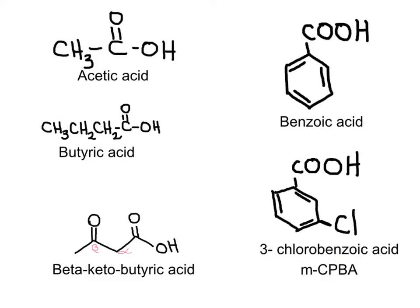When naming carboxylic acids, carbon number 1 is always where we have the carboxyl group. Remember that aldehydes and ketones contain the carbonyl group — that is only the carbon-oxygen double bond — and carboxylic acids have the carboxyl group. When naming carboxylic acids in the common system, carbon number 2 is the alpha carbon, and carbon number 3 is the beta carbon. This substance is beta-keto-butyric acid.